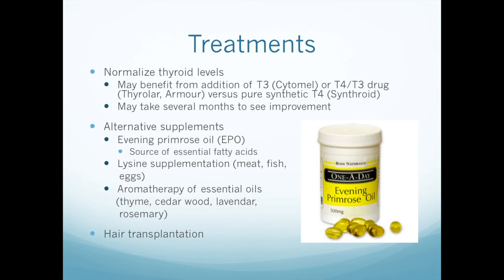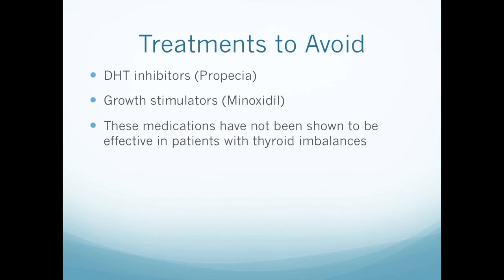There are also alternative supplements reported to help with hair loss. The most common is evening primrose oil, although there are others including lysine and aromatherapy. In certain situations, hair transplantation can be an option, although it usually doesn't come to that in thyroid disease. Some hair treatments such as DHT inhibitors and growth stimulators, which are often helpful in other types of hair loss, really don't seem to be very helpful for thyroid disease — so not really worth trying those.